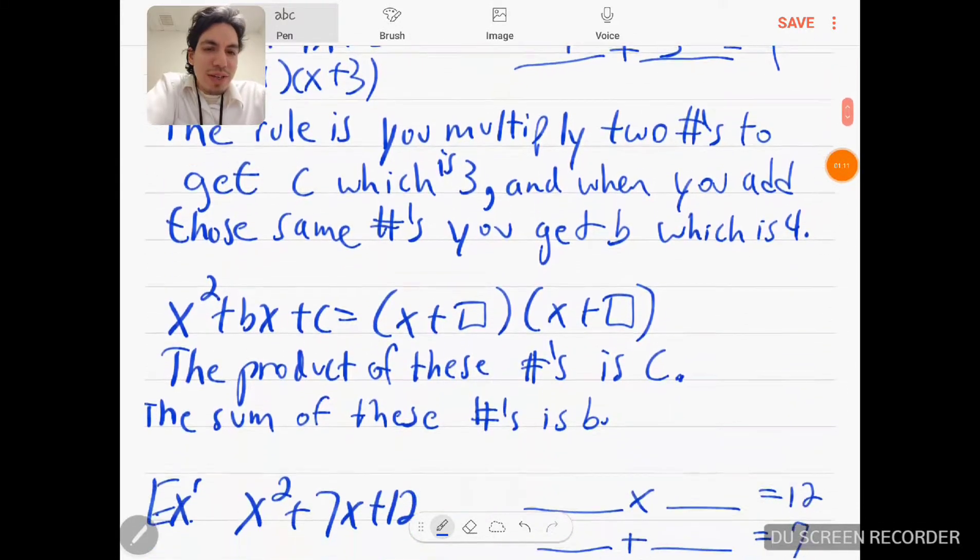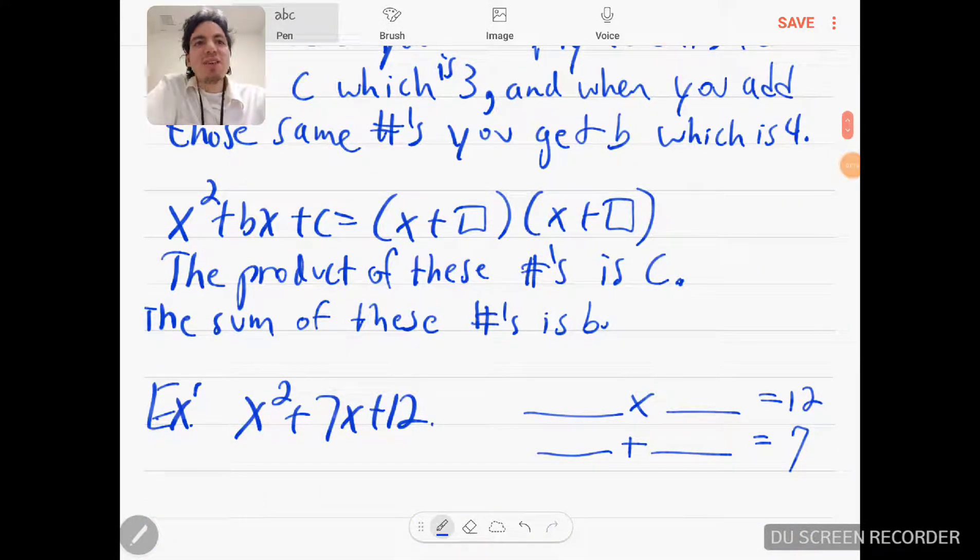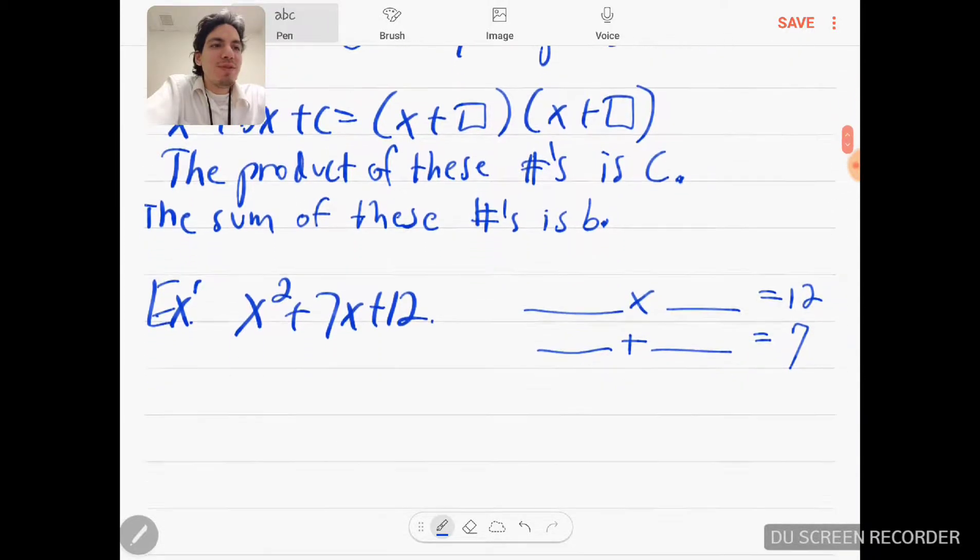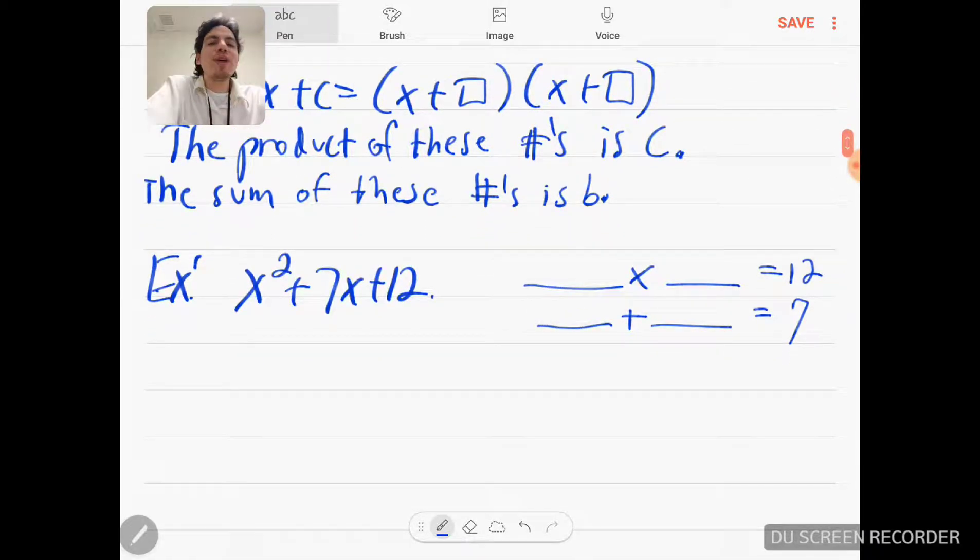So now scroll down. The idea is you see here, the product of these is c, the sum of these two is b. Okay, so I already preemptively rewrote this one for this next one.